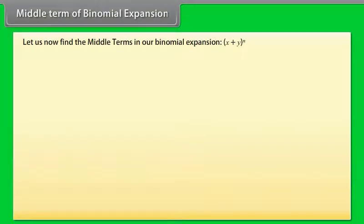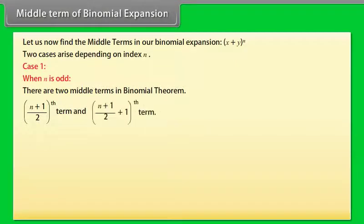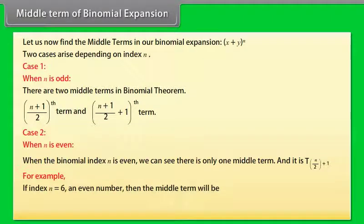Middle term of binomial expansion. Let us find the middle terms in the binomial expansion of (x plus y) raised to power n. Two cases arise depending on index n. Case 1: When n is odd, there are 2 middle terms: the (n+1)/2 th term and the (n+1)/2 plus 1 th term. Case 2: When n is even, there is only one middle term and it is t(n/2 plus 1). For example, if n equals 6, then the middle term is t(6/2 plus 1) equals t4.